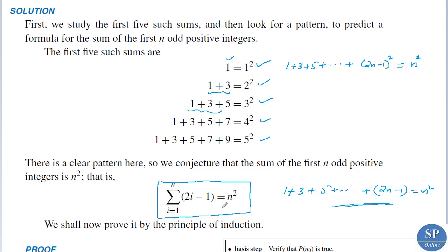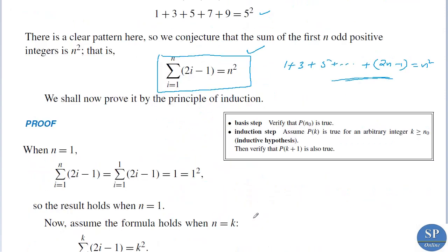Now we have to prove this formula by using mathematical induction. We know mathematical induction contains two steps. The first one is the basic step: verify that P(n₀) is true. The second step is the induction step: assume that P(k) is true for any arbitrary integer k greater than or equal to n₀, then verify that P(k+1) is also true.